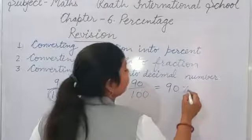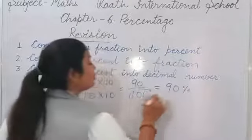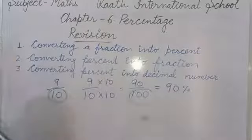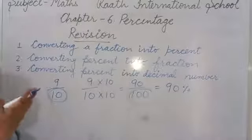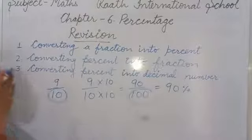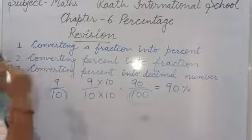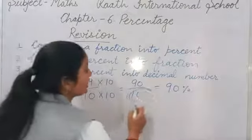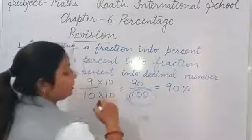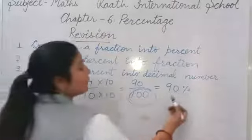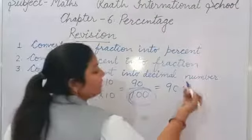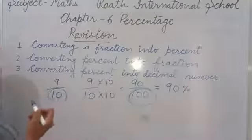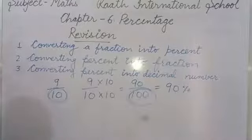So we can say that 90 percent. Whenever the denominator is 100, directly with the numerator we will use the percentage symbol, because percentage means out of 100. So whenever you have 100 as a denominator, directly with the numerator we will use the percentage symbol.